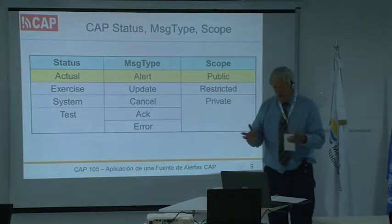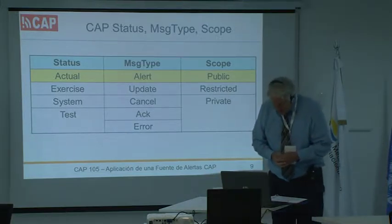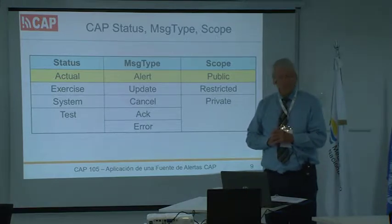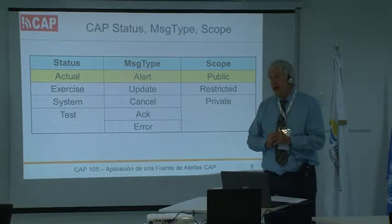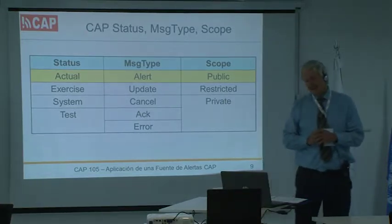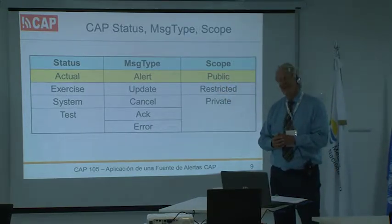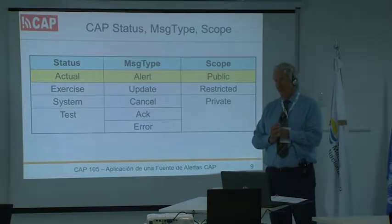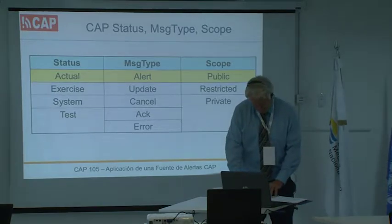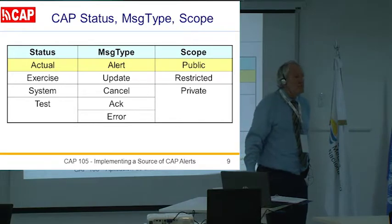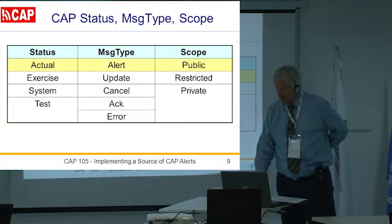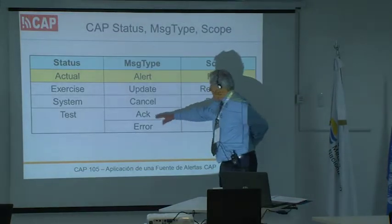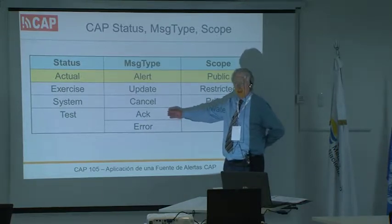For status, these next fields are probably always set the same way. Status is 'actual' because it's not an exercise, not a system test. You may have heard about the nuclear attack alert on Hawaii — that should have been listed as a test. There was also a National Weather Service alert that should have said 'test' but said 'the earth has left its orbit and is hurtling toward the sun.' For message type, we're selecting 'alert' — the original reporting of this event, not an update or a cancel.